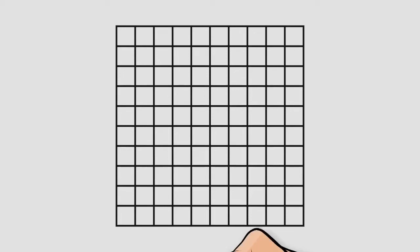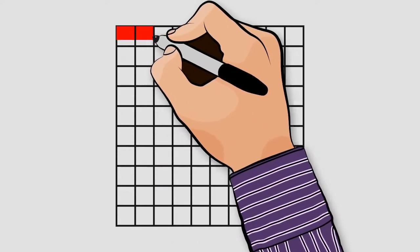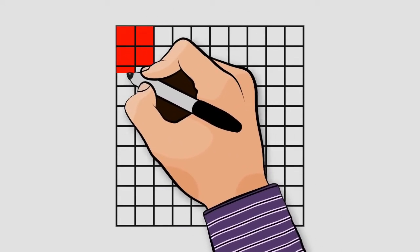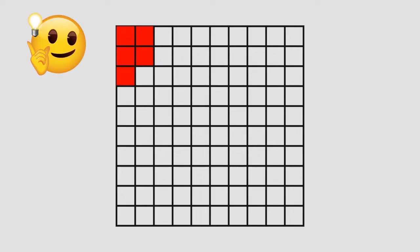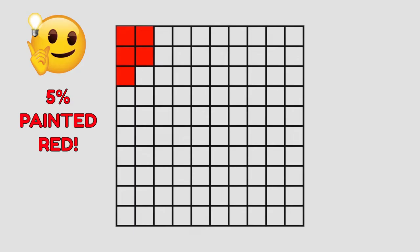And what if we paint 5? What percentage of little squares have been painted? That's right — the answer is 5%. 5% of little squares are red now.